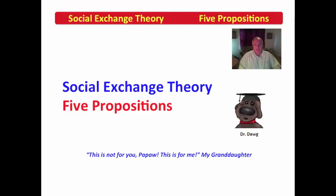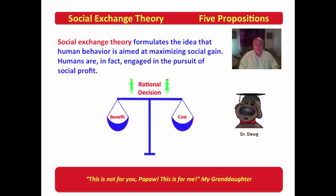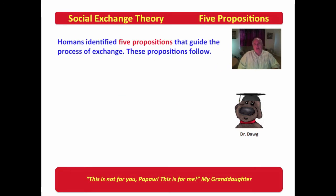We will continue our examination of social exchange theory by examining five underlying propositions identified by Homans. Social exchange theory formulates the idea that human behavior is aimed at maximizing social gains. Humans are engaged in the pursuit of social profit. Here we see a male and a female actively engaged in making rational decisions, weighing benefits against cost to determine if the profit of that action makes it worth following through. If benefits outweigh costs it's a good decision; if costs outweigh benefits it may be a poor decision. Homans identified five propositions that guide the process of exchange.